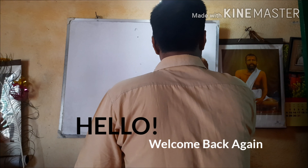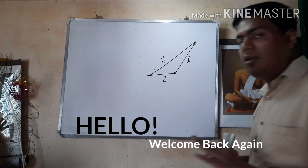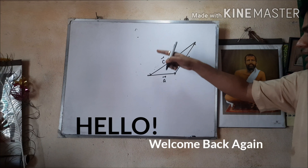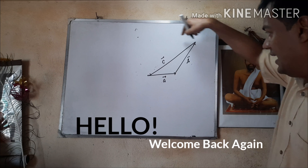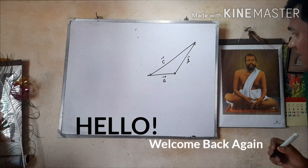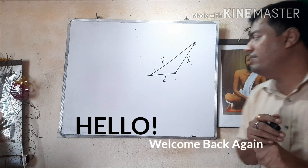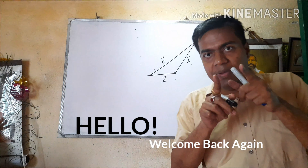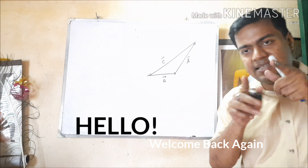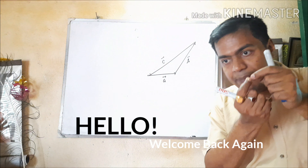So our final statement is: if n number of sides of a polygon are represented by n number of coplanar vectors taken in a particular order, then the (n+1)th side or remaining side of the polygon taken in opposite order will represent the direction of the resultant vector. It is nothing but a repetitive application of the triangle law of addition of vectors.